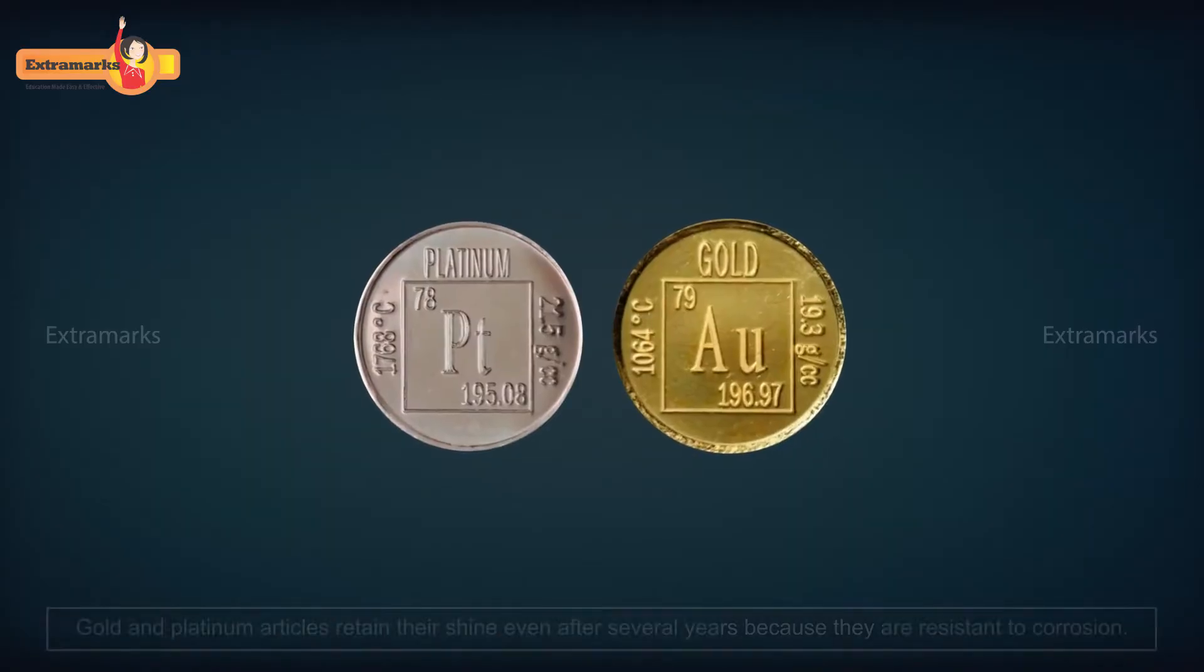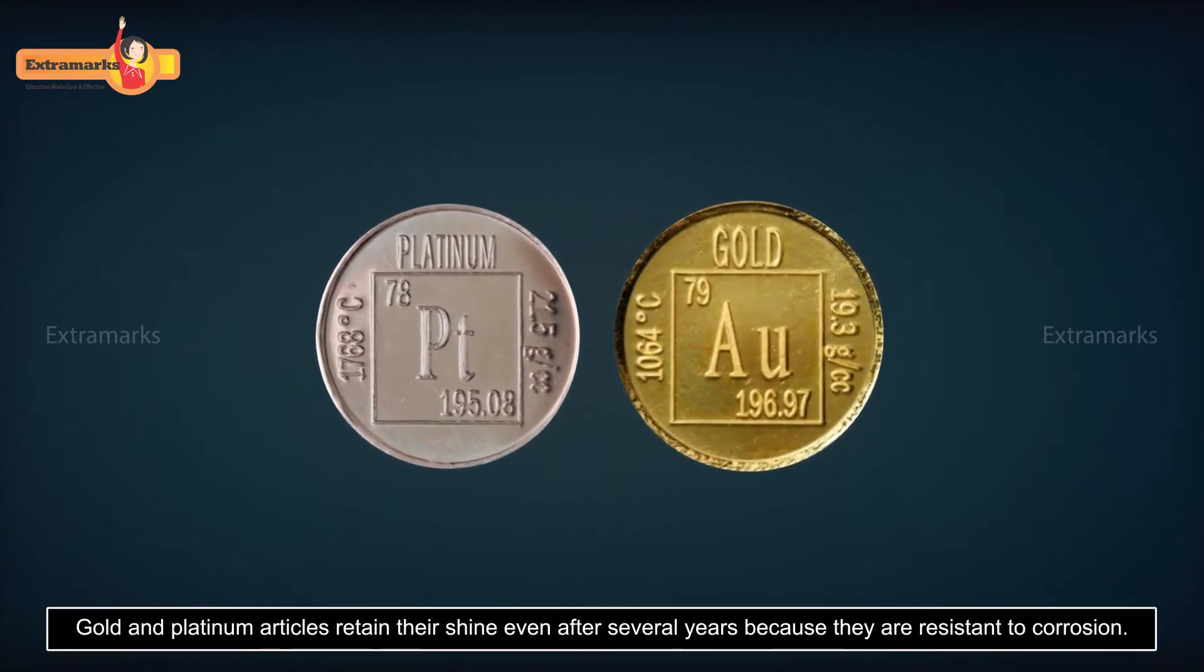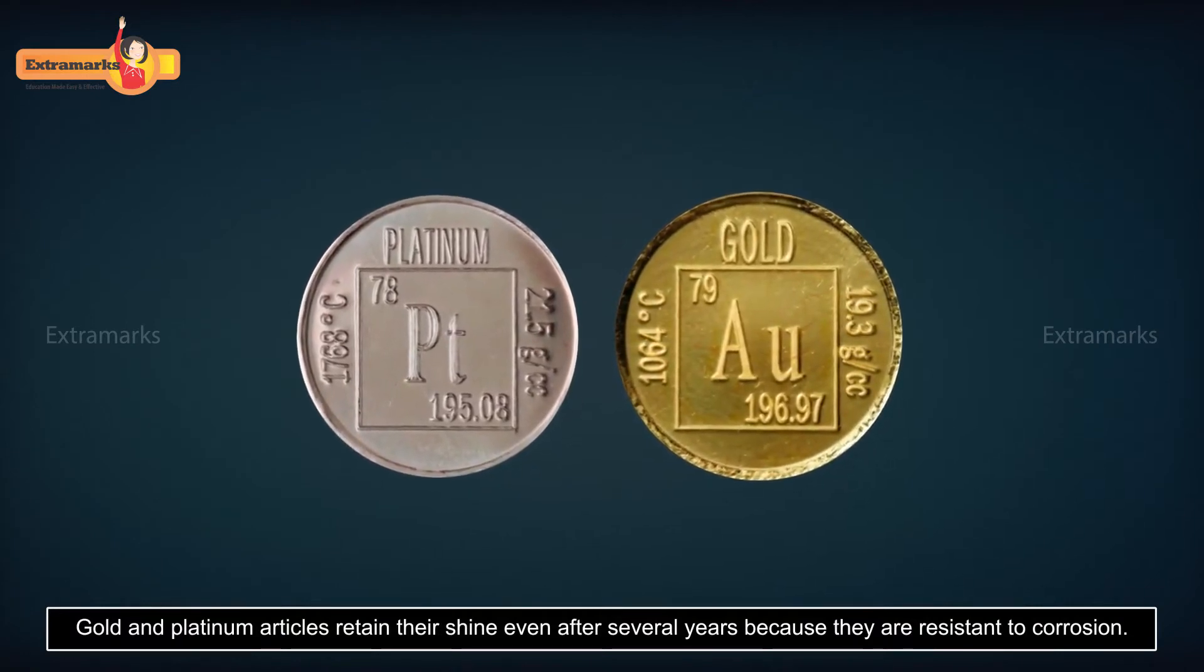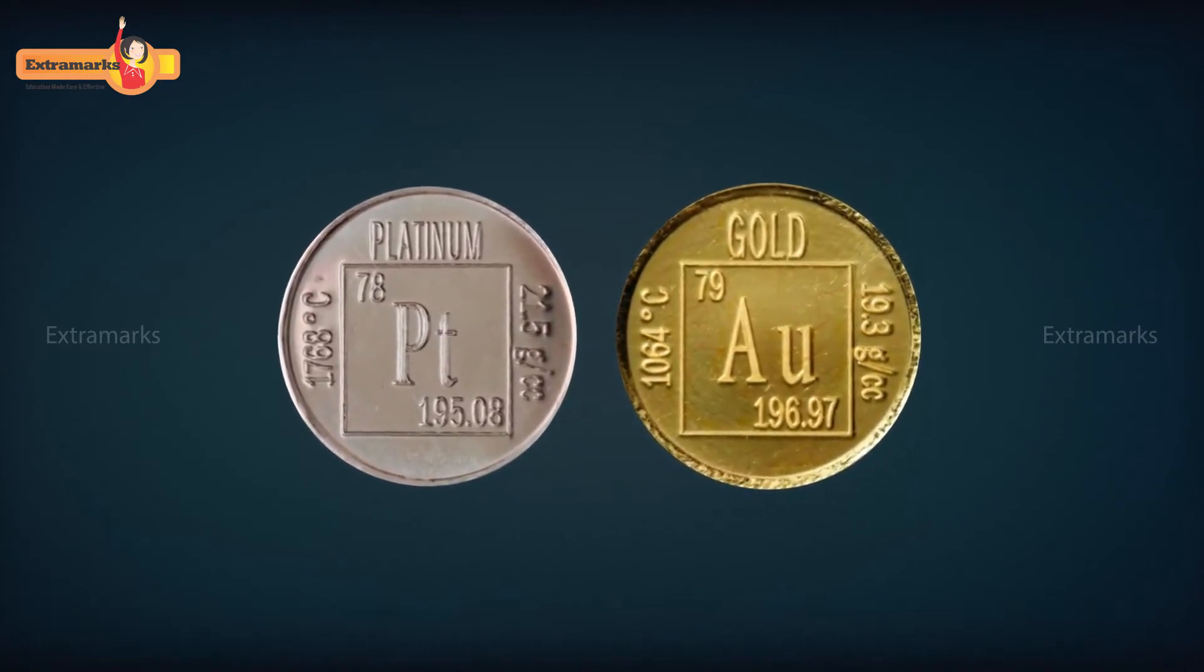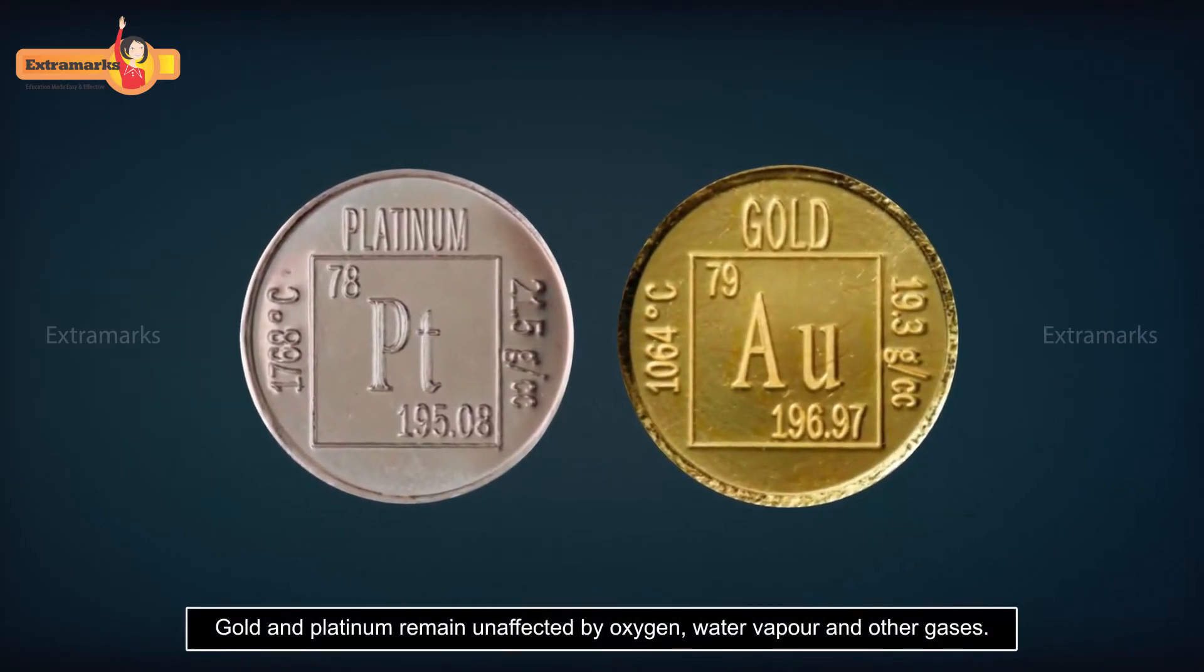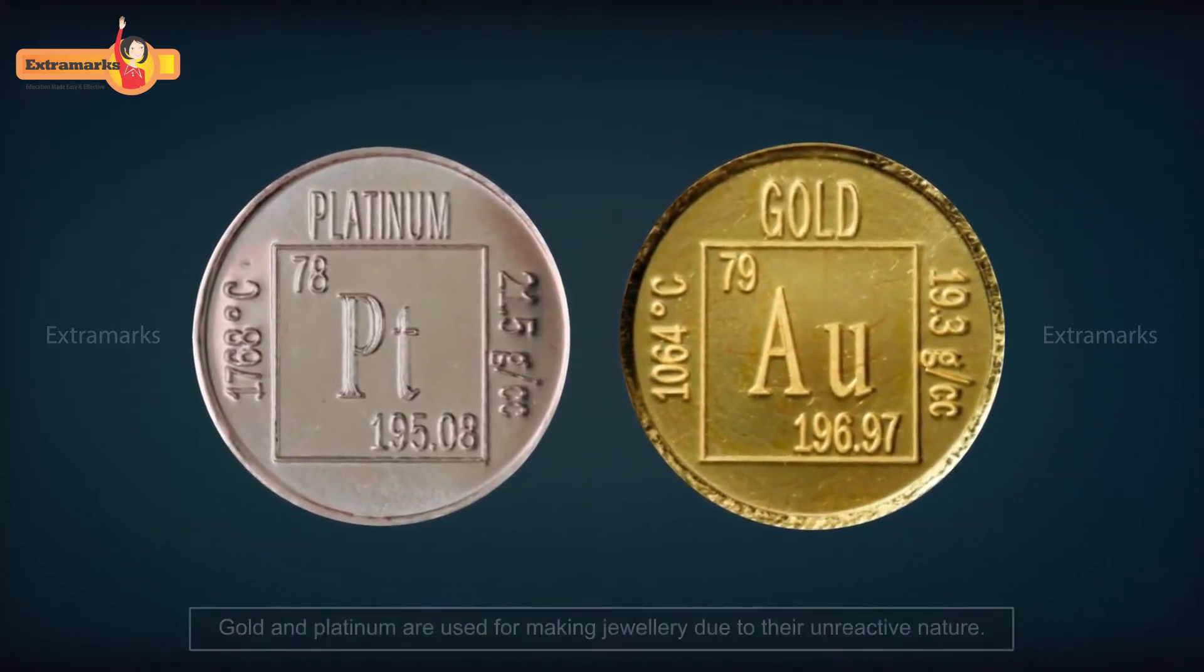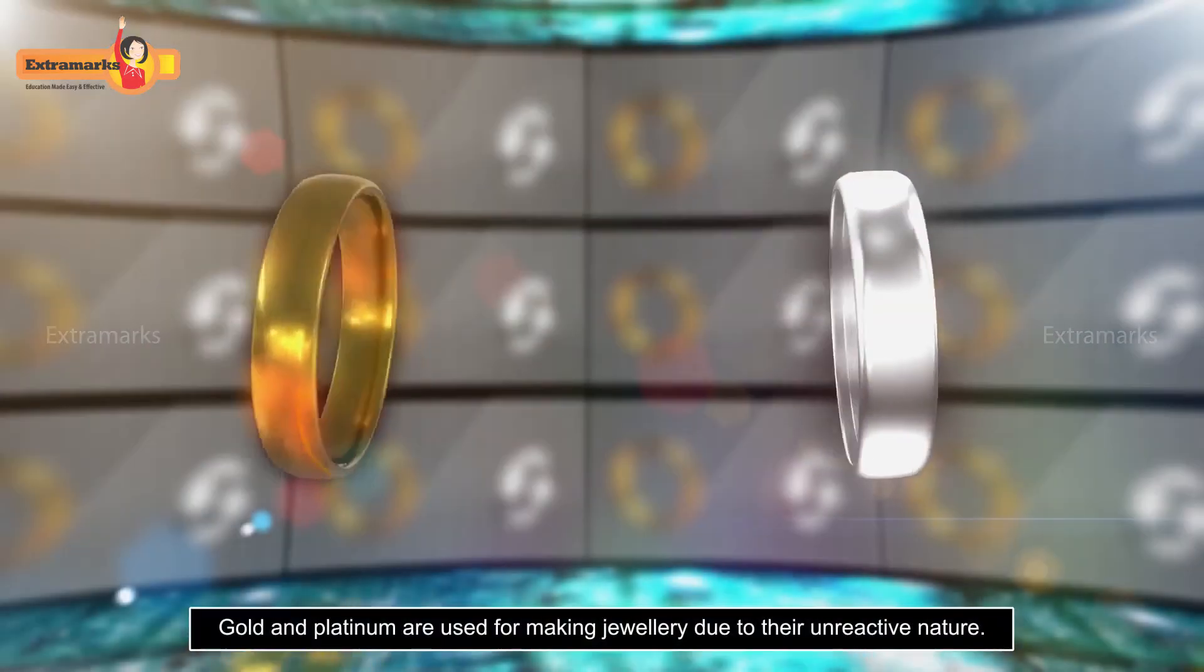On the contrary, the gold and platinum articles retain their shine even after several years because they are resistant to corrosion. They are highly unreactive metals and remain unaffected by oxygen, water vapor, and other gases present in the atmosphere. Due to their unreactive nature, gold and platinum are used for making jewelry.